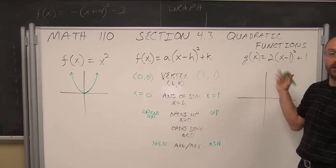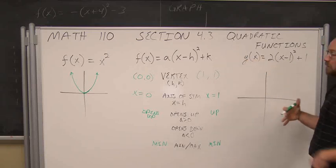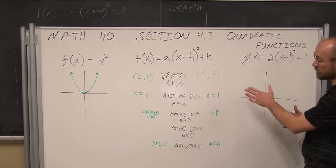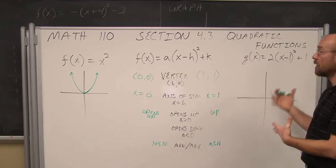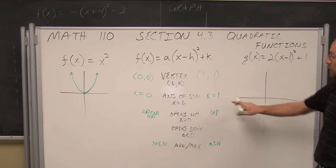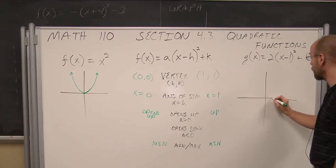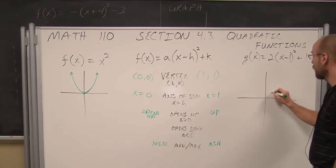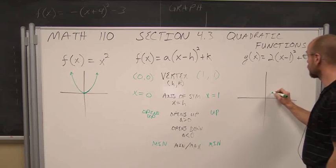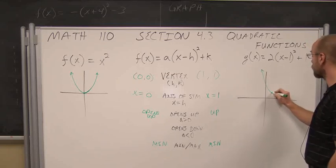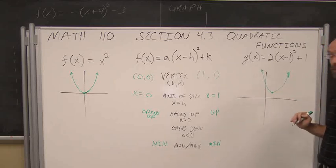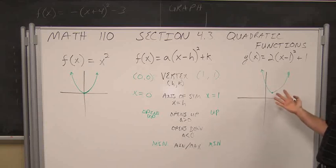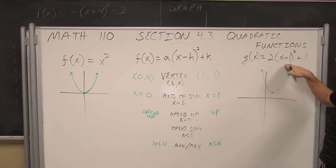Now let's graph this with just this information. When it's in standard form, all we really need to know is its vertex, its axis of symmetry, and the direction in which it opens. We can sketch the graph of any quadratic. So I'm going to go (1, 1) for my vertex, over 1, up 1. I know it's a parabola that opens up. I could find other information, such as maybe this y-intercept. I notice there are no x-intercepts. We've sketched the function and know its behavior simply because it was in the proper form.